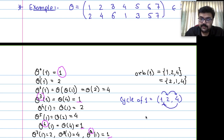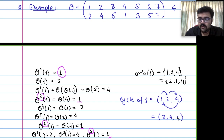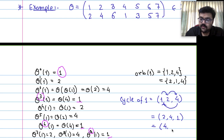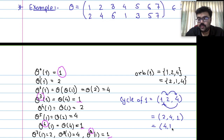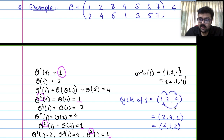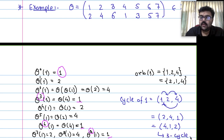This is called a 3-cycle, or a cycle of length 3, or cycle of order 3. From the orbit we get a cycle. The orbit is just a set so order can be changed, but the cycle must preserve cyclic order. So (2, 1, 4) would be different — it would mean 2 goes to 1, which is not the case here; 2 goes to 4.